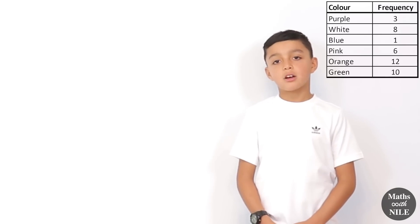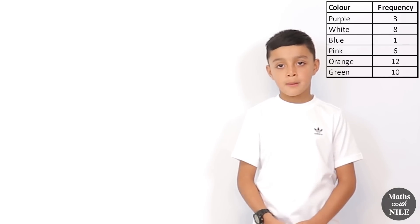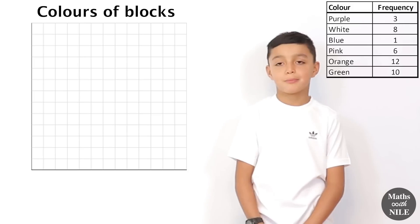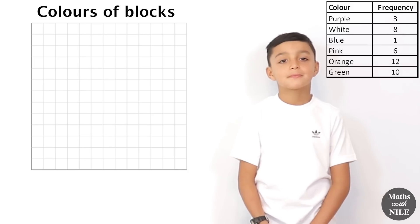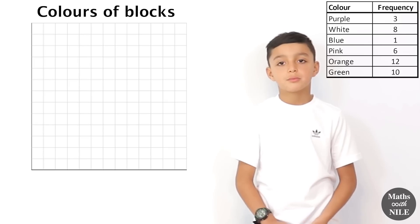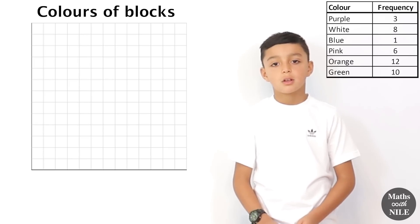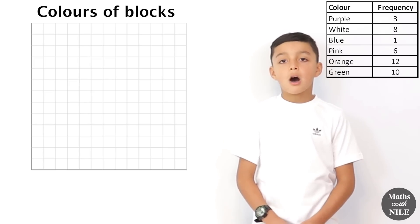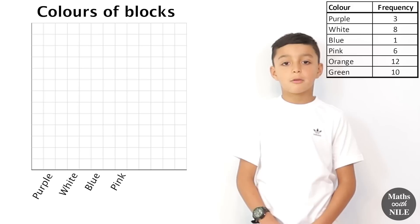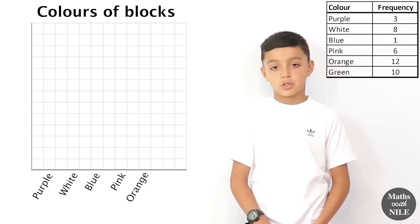Okay, so now that we've done our tally chart, we can fill in our bar chart. Okay, so we're going to use the information to draw a bar chart. What is really important? You always need a title, and our title for today will be Colours of Blocks. Okay, and we're going to have a vertical line and a horizontal line. And what information are we going to put along the bottom on that horizontal line? Our colours. So we'll have purple, white, blue, pink, orange and green.